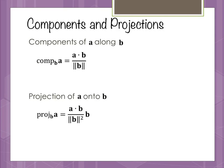The last concept in this section is components and projections. The component of a along b is defined as a dot b divided by the magnitude of b — this gives you a scalar. The projection of a onto b is a dot b divided by the magnitude of b squared, times the vector b — this gives you a vector. So the projection of a vector onto a vector is a vector, while the component of a vector along a vector is a scalar.